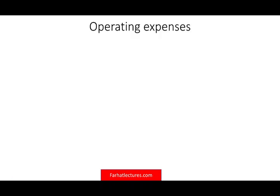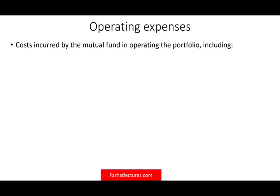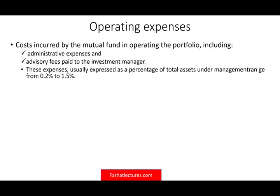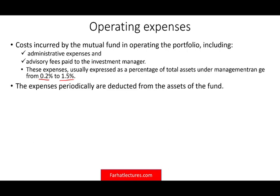Let's start with operating expenses. From the word itself, it's the cost incurred to operate the portfolio — maybe administrative costs, advisory fees, or pay-to-investment managers. These costs generally range from 0.2 to 1.5% of the assets under management — it's a percentage, not a dollar amount. These expenses are periodically deducted from the assets of the fund; they don't send you a bill. They simply deduct it from the fund.